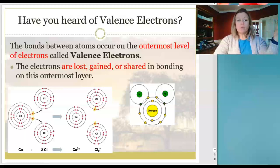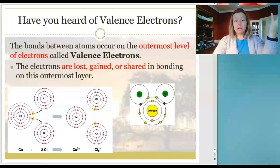At that level, electrons are either lost or gained or shared in order to make a bond. We're only going to talk about sharing today when we talk about covalent bonds. If you look at this illustration, you can see here that this calcium atom is going to lose two of its ions to chlorine. That's ionic.